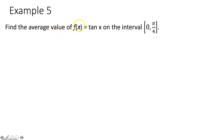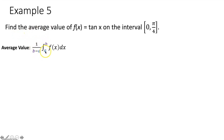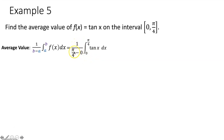Example five: find the average value of f(x) = tan x on the interval from 0 to π/4. The average value formula is 1/(b − a) times the integral from a to b of f(x) dx, where a = 0 and b = π/4. Simplifying: 1 over (π/4 − 0) equals 1 over (π/4), which equals 4/π. So we get 4/π times the integral from 0 to π/4 of tan x dx.